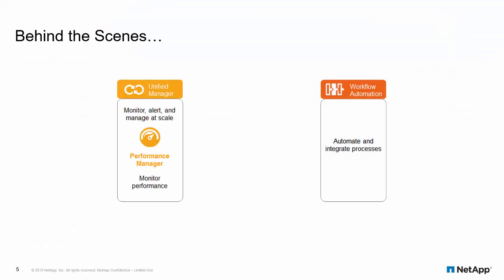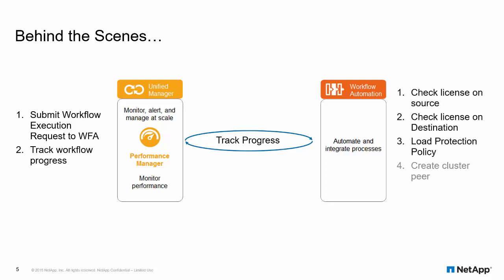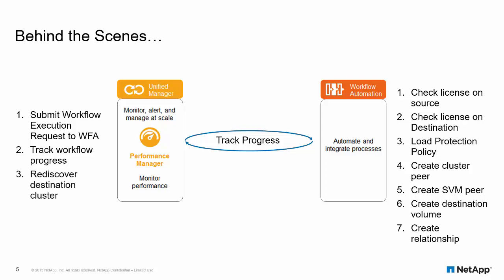Now that I've kicked this job off, here's what's going on behind the scenes. First, we submit the execution request to WFA, and immediately after that we start to track the workflow progress — these two things start at about the same time. Then WFA takes over: it first checks licenses, loads the protection policy, creates peering if needed, creates the destination volume, and then creates the SnapMirror or SnapVault relationship. Then Unified Manager rediscovers the destination cluster to find the new destination volume and make sure SnapMirror has been applied and everything is working as planned.